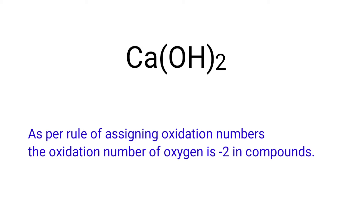As per the rule of assigning oxidation numbers, the oxidation number of oxygen is minus 2 in compounds. We can write the oxidation number of the element above its symbol and the total oxidation number of the atoms below its symbol.